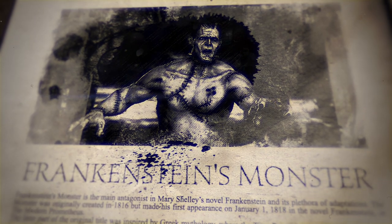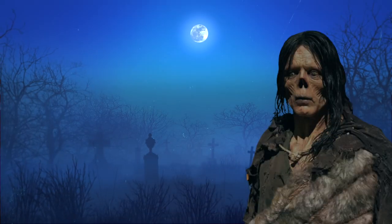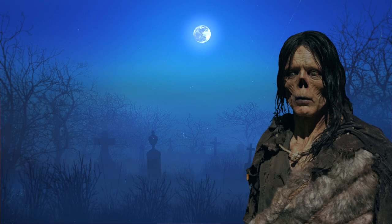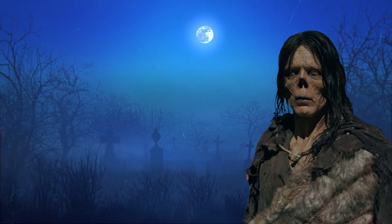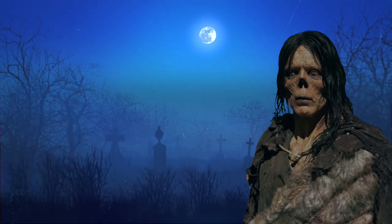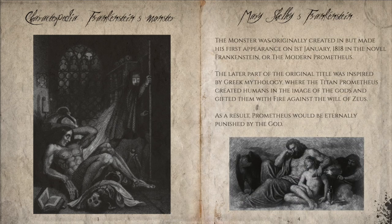Frankenstein's monster is the main antagonist in Mary Shelley's novel Frankenstein and its plethora of adaptations. The monster was originally created in 1816 but made his first appearance on the 1st of January 1818 in the novel Frankenstein or the Modern Prometheus.